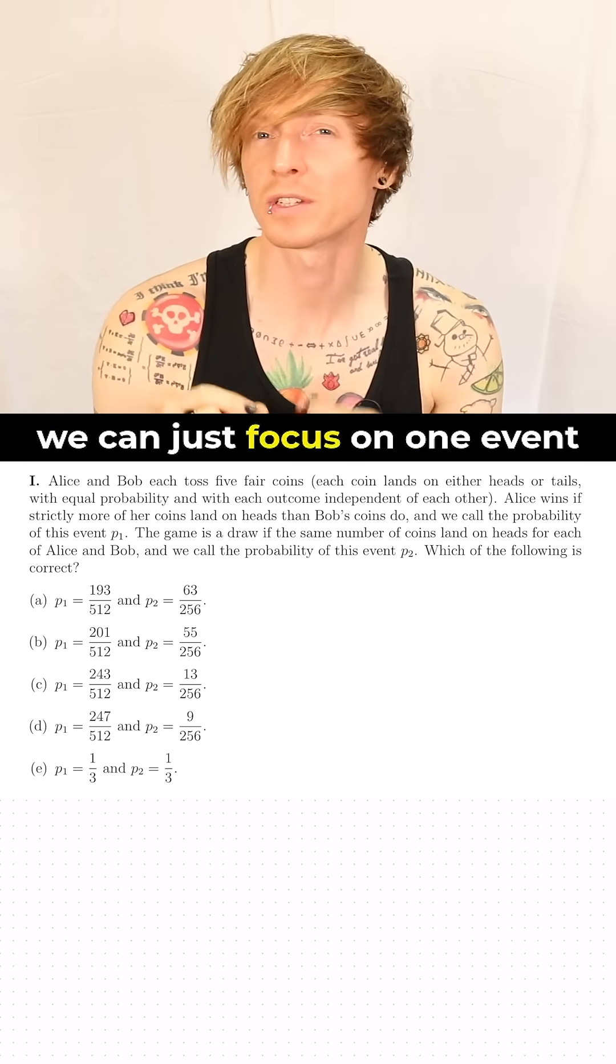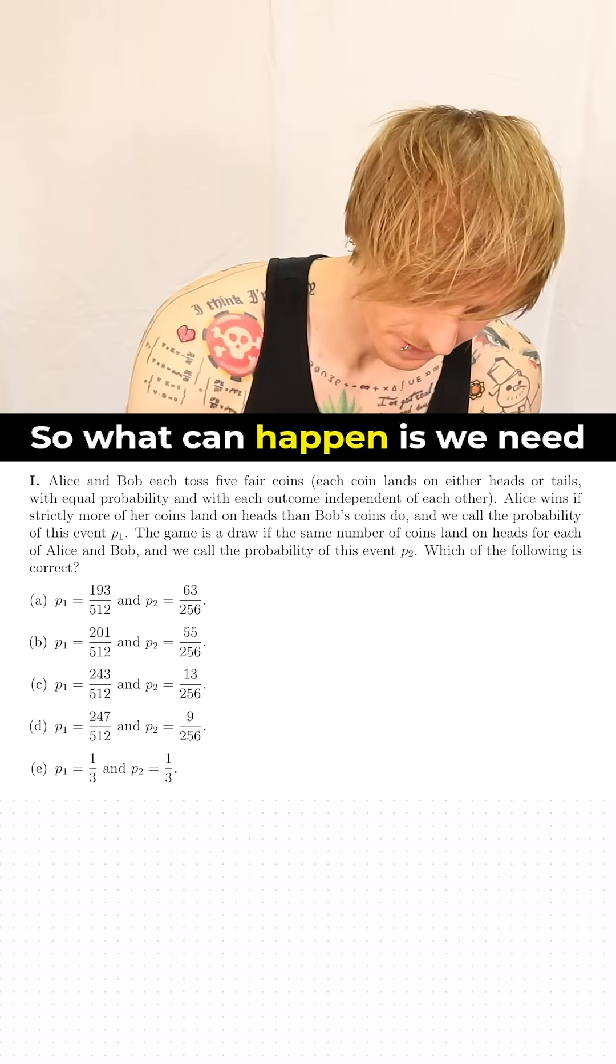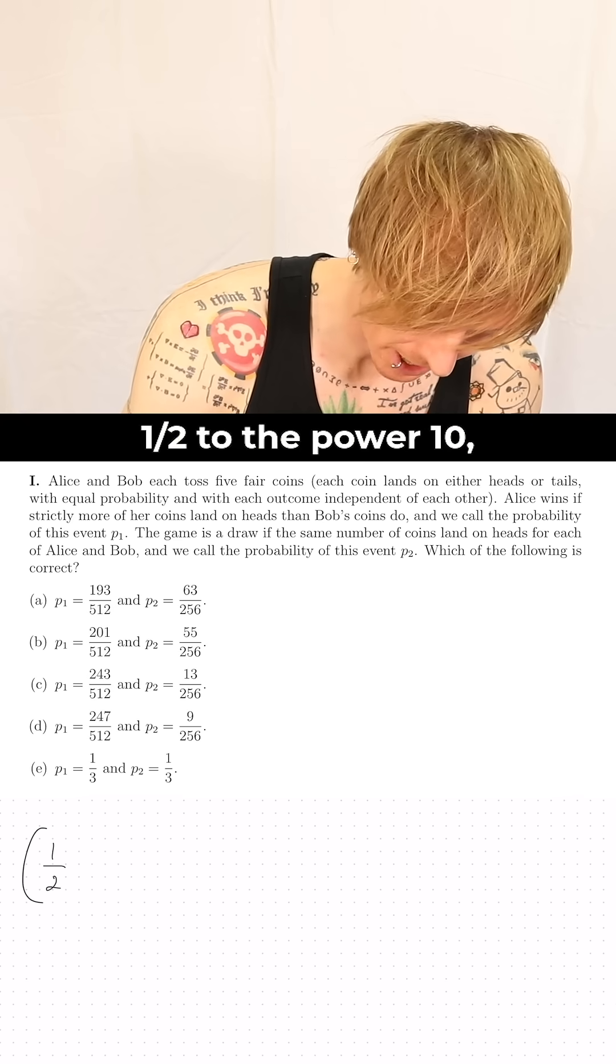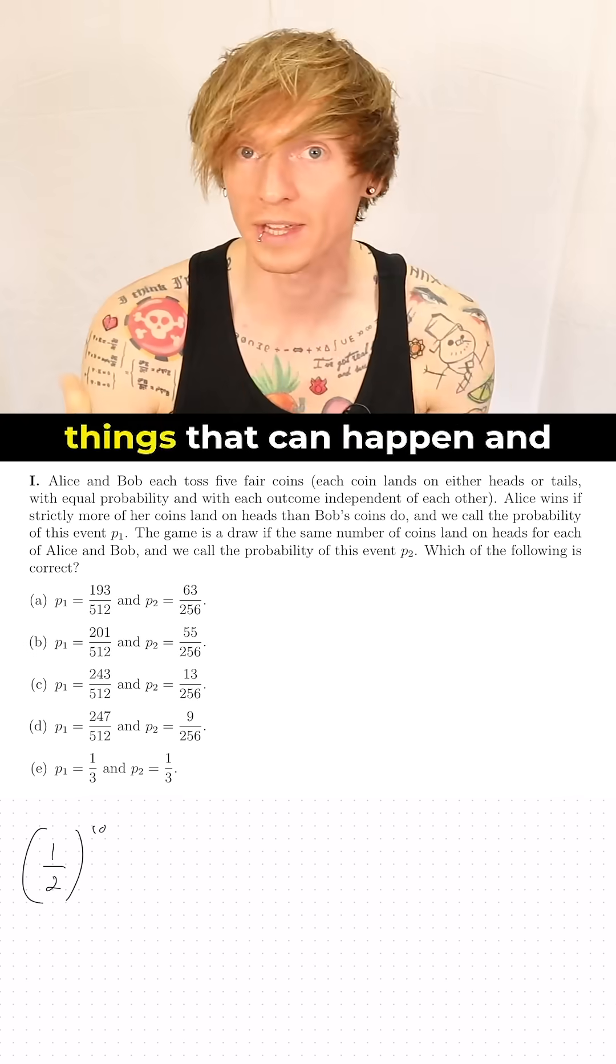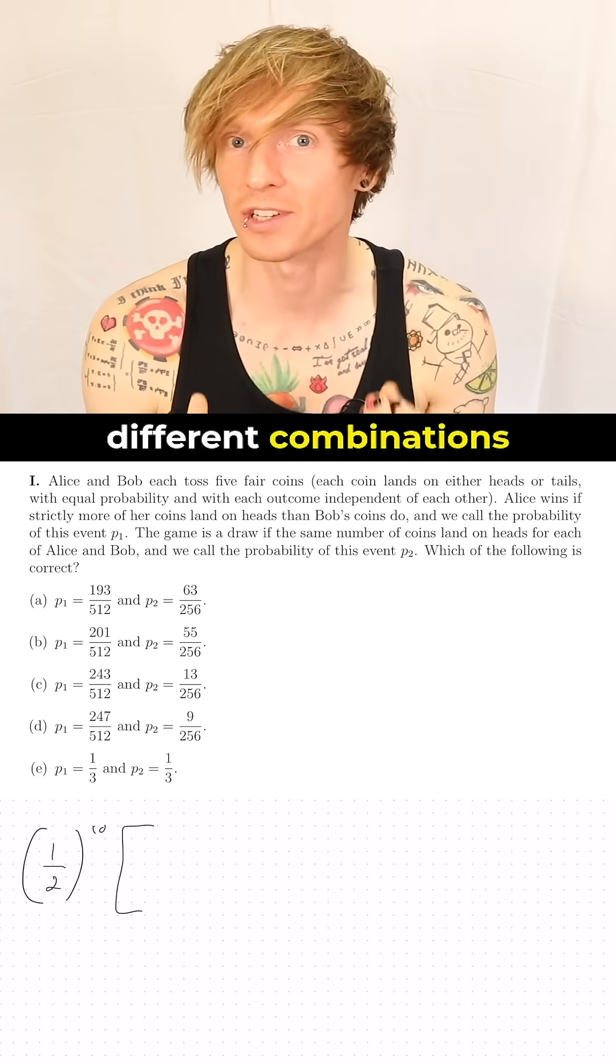Since all the answers are different, we can just focus on one event and I'm going to look at P2 where they draw. So what can happen is we need a half to the power 10 because we're specifying all things that can happen and that's going to multiply the different combinations that could occur.